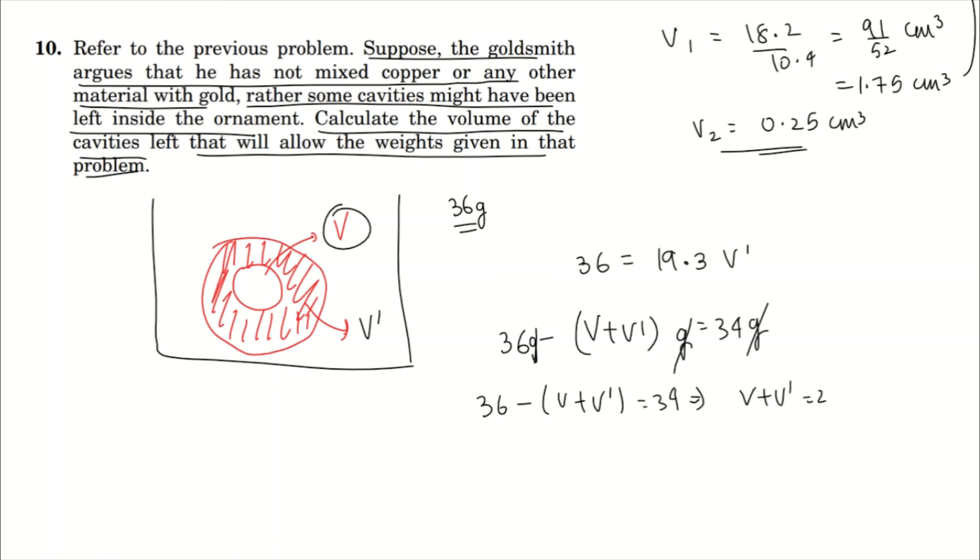Two equations, two unknowns—it's become a simple question. V' value from the first equation we can calculate to be 36 divided by 19.3. This is just equal to approximately 1.86 cm³. If we now put 1.86 cm³ into this equation...